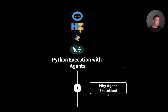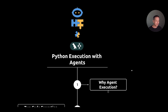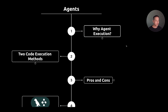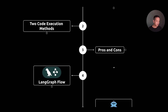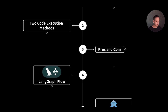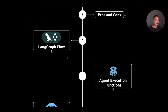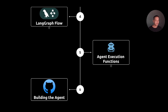In this video, we're going to talk about executing Python with AI agents. We're going to start off by talking about why having an agent execute Python code is interesting. Then I'm going to walk you through the two core methods of executing Python code with agents, the pros and cons of the two methods. I'm going to set up a LangGraph flow, building an agent in LangGraph, and finally we're going to see how this agent works — an agent that allows you to execute arbitrary Python code.